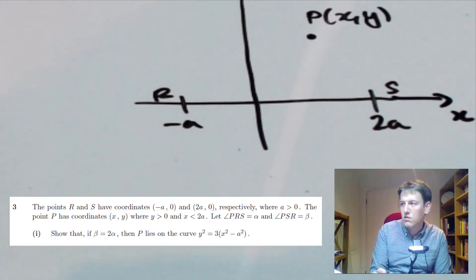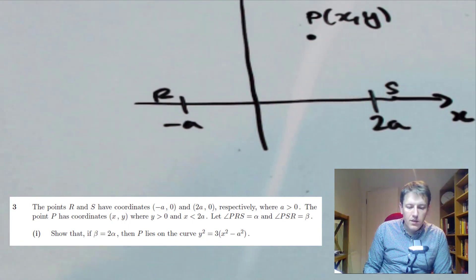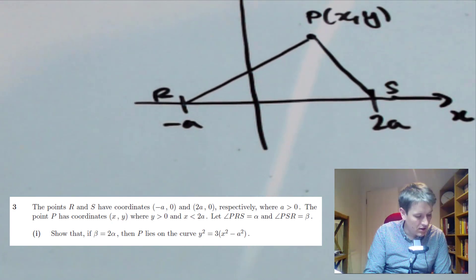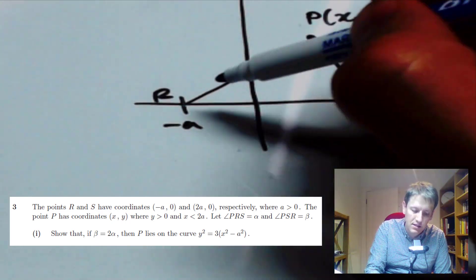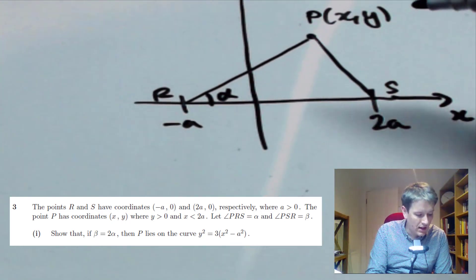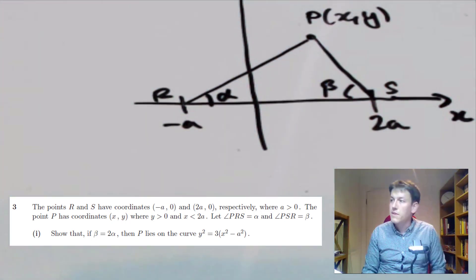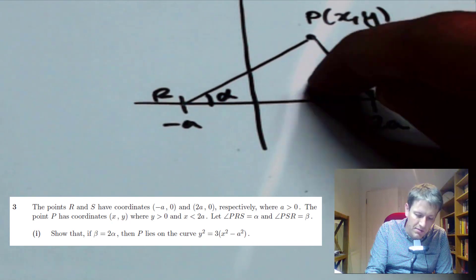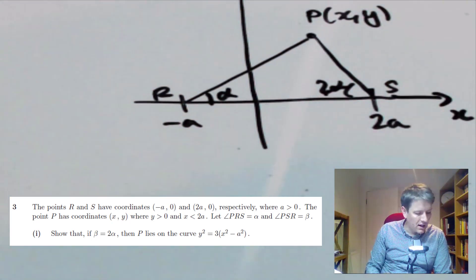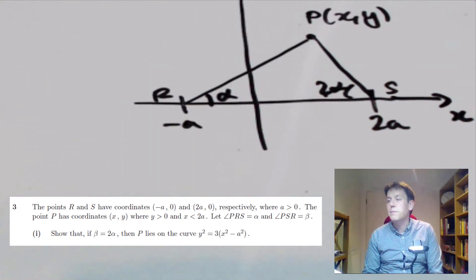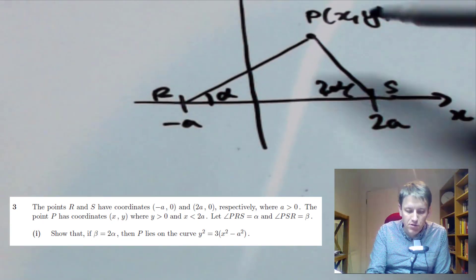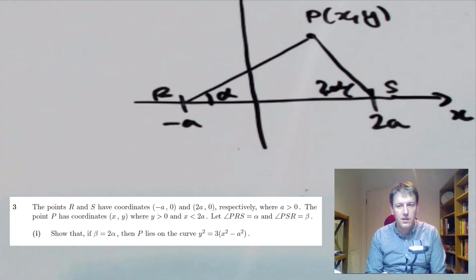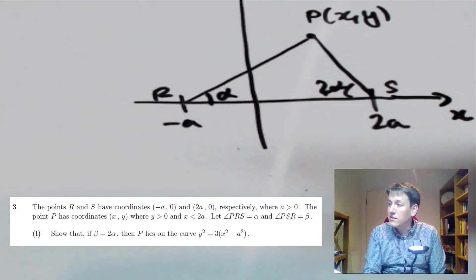We're going to turn this into a triangle because we're told that the angle PRS — from P to R to S — is alpha, and the angle PSR — from P to S to R — is beta. It says that if beta equals 2 alpha, I'm going to immediately replace beta with 2 alpha. Then P lies on the curve y² = 3x² − a². We're going to show that the coordinates x and y satisfy that equation.